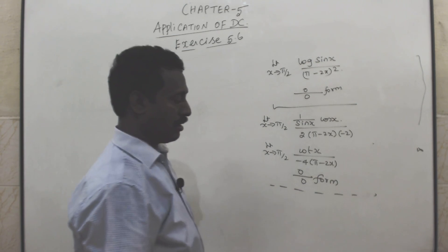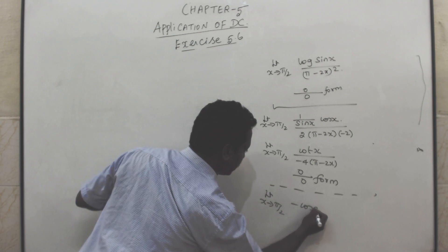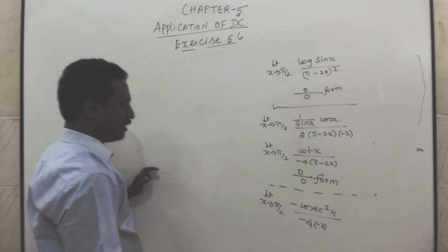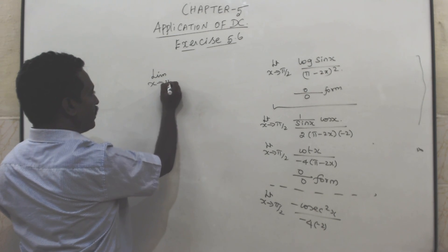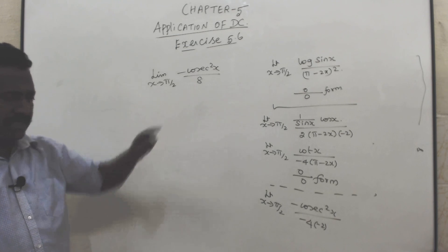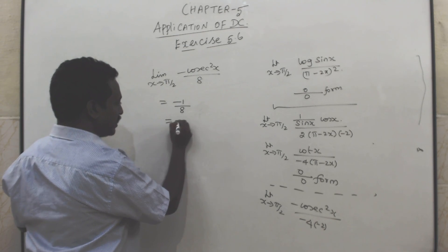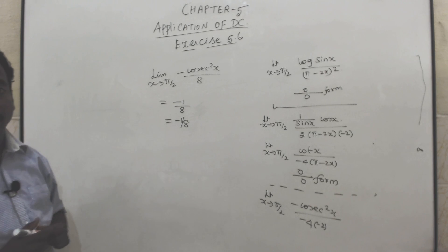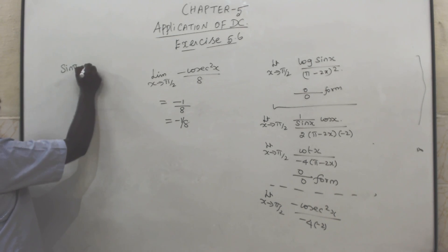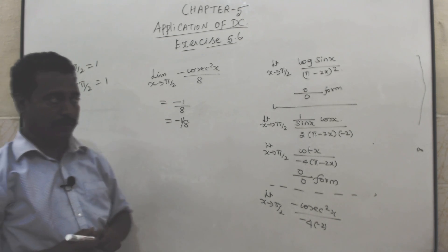Apply L'Hôpital's rule once more: differentiate cot x to get −csc²x, differentiate −4(π − 2x) to get −4·(−2) = 8. So the limit becomes −csc²x / 8. Substituting x = π/2: csc(π/2) = 1/sin(π/2) = 1, so the answer is −1²/8 = −1/8.